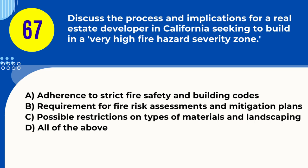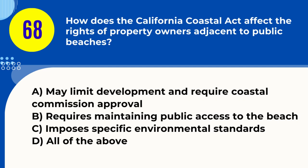Question 67. Discuss the process and implications for a real estate developer in California seeking to build in a very high fire hazard severity zone. A. Adherence to strict fire safety and building codes B. Requirement for fire risk assessments and mitigation plans C. Possible restrictions on types of materials and landscaping D. All of the above. Answer: D. All of the above. Explanation: Developing in a high fire hazard zone requires complying with fire safety codes, conducting risk assessments, and using fire-resistant materials.